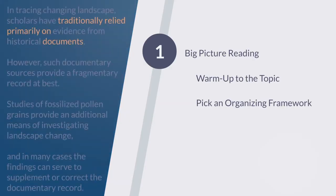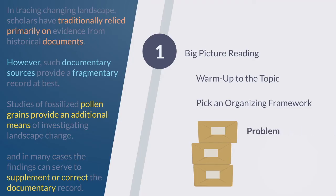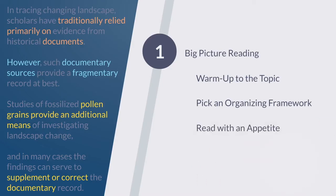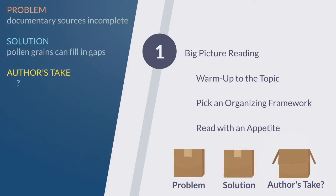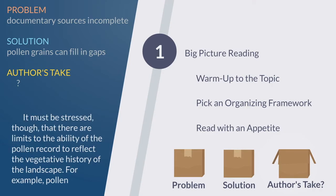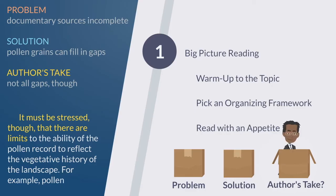What we reacted to in the early going of this passage was that people were traditionally, primarily doing something. However, the author had a negative feeling. So we started thinking, okay, is the author saying this is a problem and I've got a solution? Here's the old sucky way, here's the new better way? We have to read with an appetite, which means that we're keeping track of which boxes we've filled and which ones are still open. Once we were done with the first two paragraphs, we knew the old way was documents, the new way was pollen, but we still weren't really sure how the author felt about this new solution. And that's why when we hit the last paragraph, the very first sentence really hit us strong. We had accomplished our mission and filled in the final blank of our big picture.